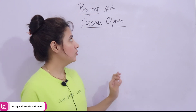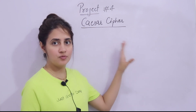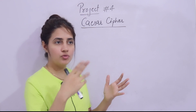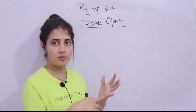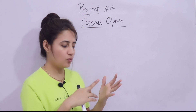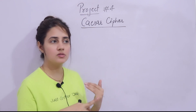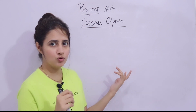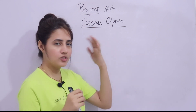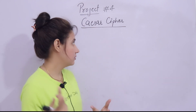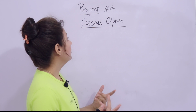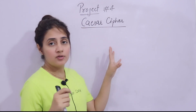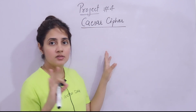Now we'll be working on a project. I think this is project number four. Till now we have discussed in the series three projects: rock paper scissors, one was password generator, and one was hangman game. You can check out the Python playlist on my channel. That is Caesar cipher — we are going to implement Caesar cipher.